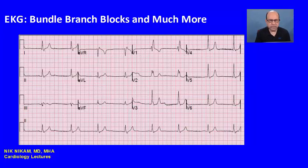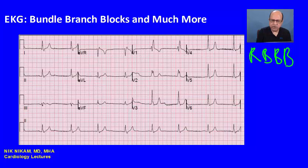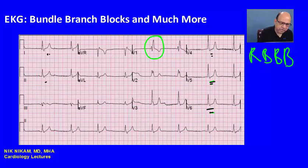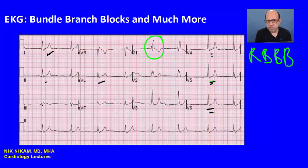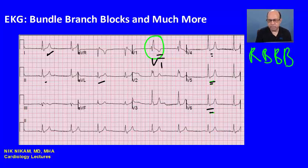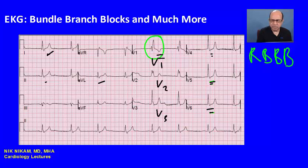Here we have a classic example of a right bundle branch block. We can see the RSR prime in V1, and a slurred R wave which is very characteristic of right bundle branch block, seen in the anterolateral leads — for example lead 1, AVL, V4 to V6. We have RSR prime in V1 along with some downsloping ST segment and inverted T waves. Generally we can see inverted T waves not only in V1 but also in V2 and V3 in many cases.